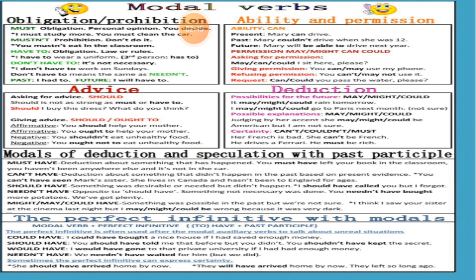Giving advice: 'should' and 'ought to.' Here are some affirmatives like 'should' and 'ought to,' and some negatives as well: 'shouldn't' and 'ought not to.' Then we have the modal verbs of deduction, like possibilities for the future.